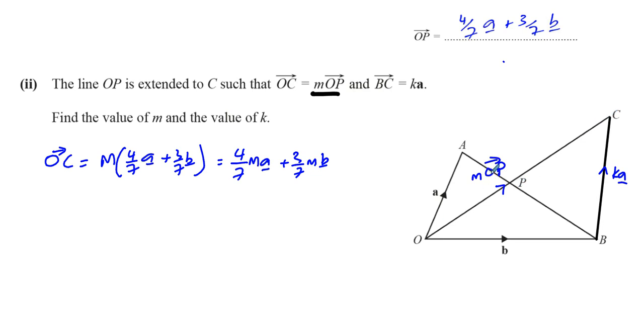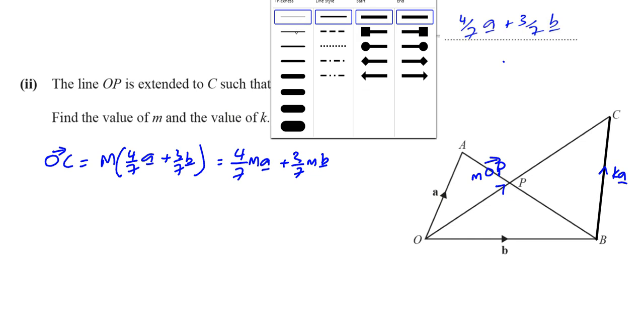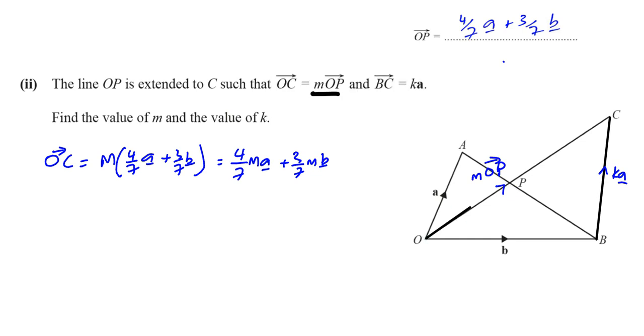And B to C is ka. Now, how can I link O and C and B and C together? How can I link them together in this question? I'm going to link them together. So I'm going to draw a line from there to there and from B to C, which I already drew anyway. So, how can I link these two lines together? What's the link between them? Because I need to find the value of m and k. I need to make an equation that links them together, that combines them together.